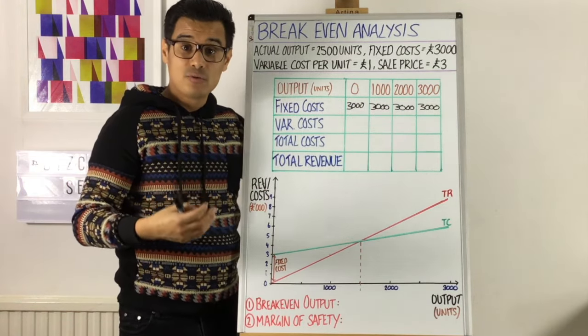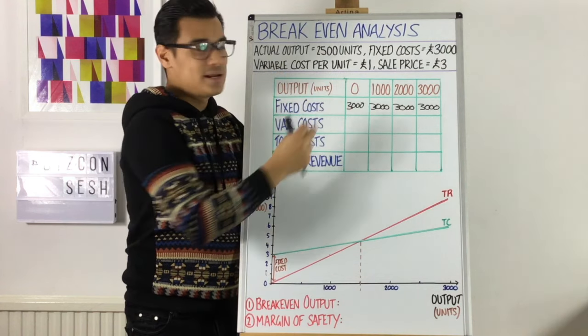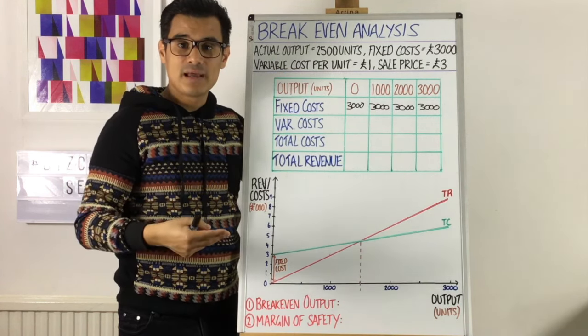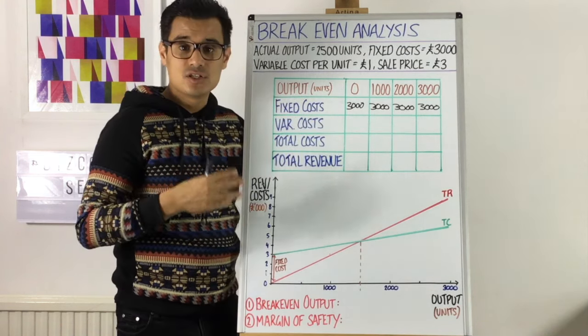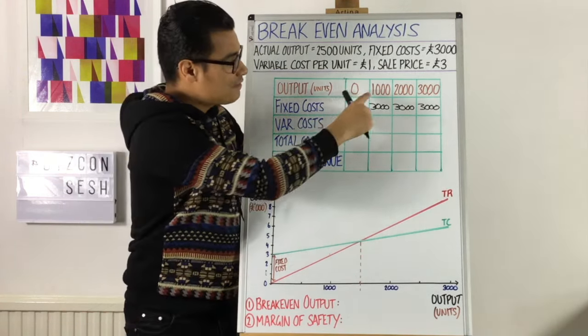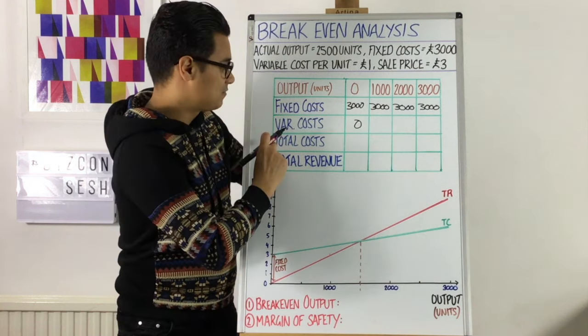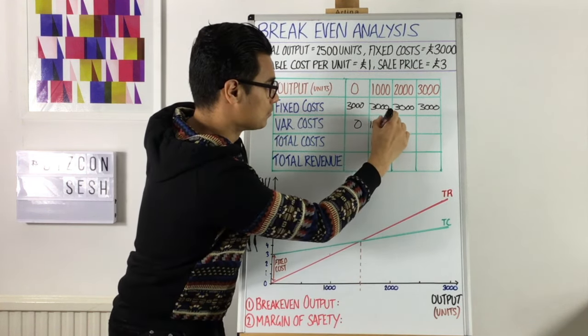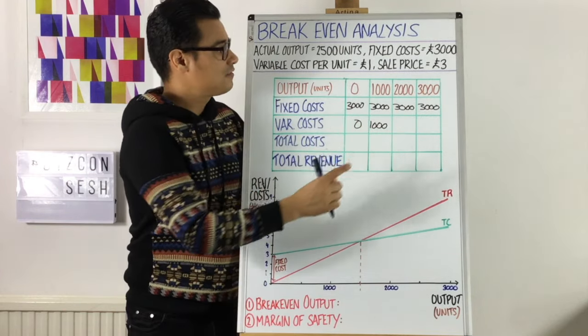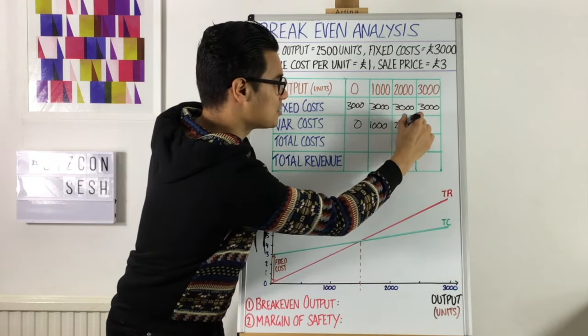Now let's work out the variable costs. So this is variable costs, and it's total variable costs. So the variable cost per unit is £1. So for every one thing that's made, it costs £1. So if zero things are made, zero times one is zero. If 1,000 things are made, then 1,000 times one would mean £1,000 is the variable costs. If you make 2,000 things, and the variable cost per unit is £1, 2,000 times one is £2,000. And so it follows that at 3,000, it would be £3,000 in total variable costs.